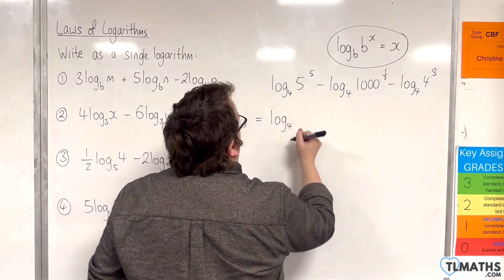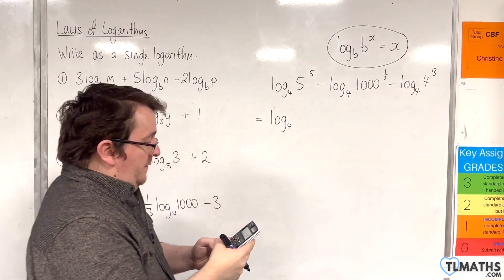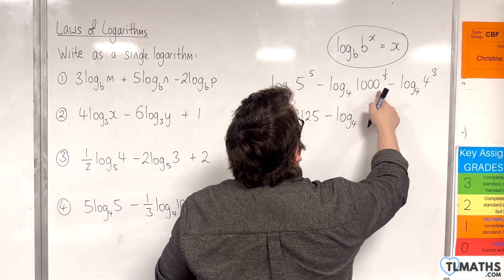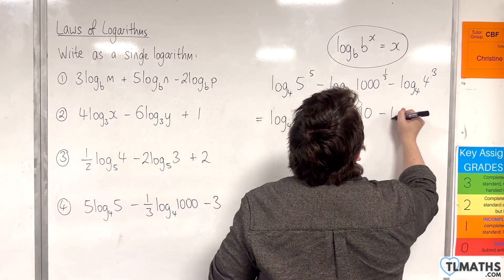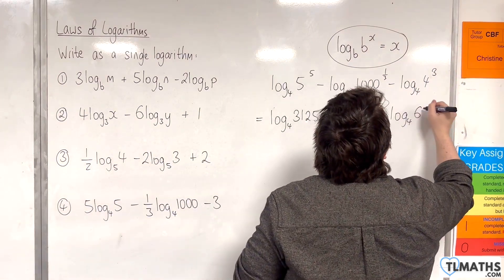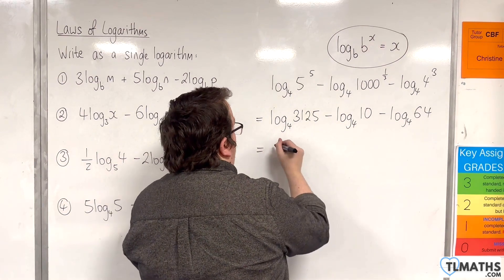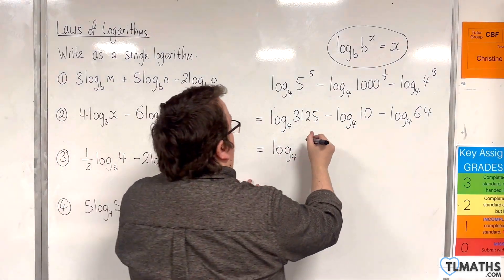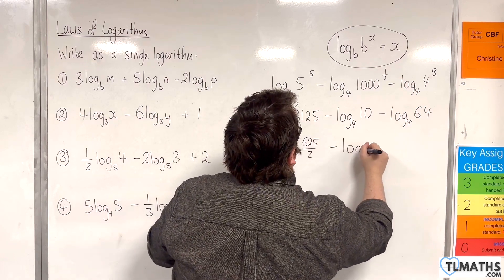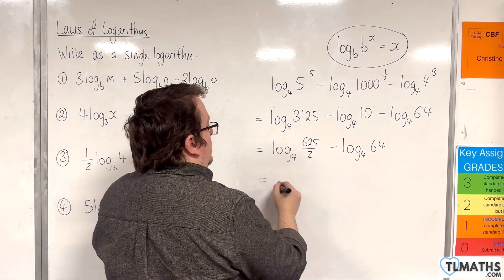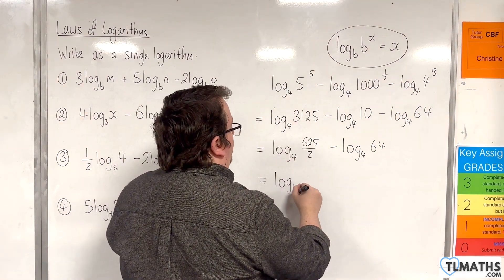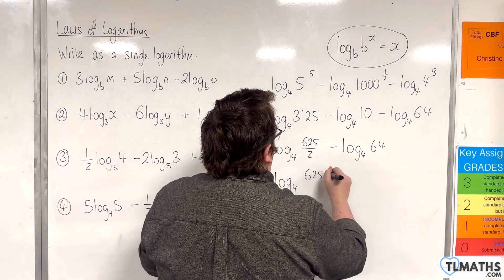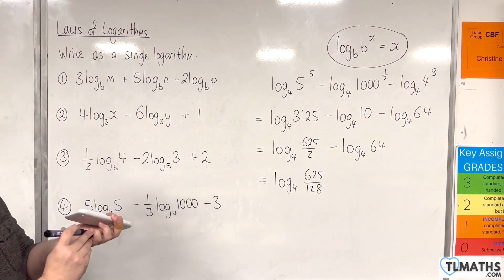So, log base 4 of 5 to the 5 — that's 3,125. Take away log base 4 of 1,000 to the power of a third, which is 10. And then log base 4 of 4 cubed, which is 64. Working from left to right, we have log base 4 of 3,125 over 10 — that's 625 over 2. And then using the quotient rule, 625 over 2 divided by 64 gives us 625 over 128. And now it's written as a single logarithm.